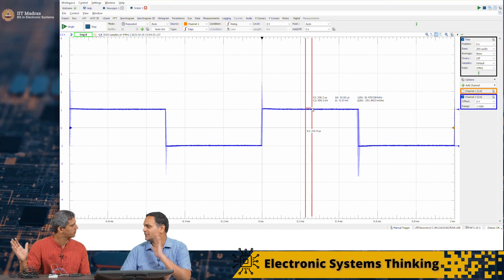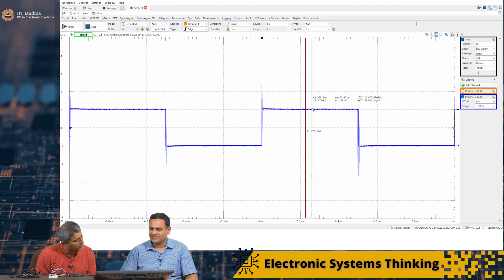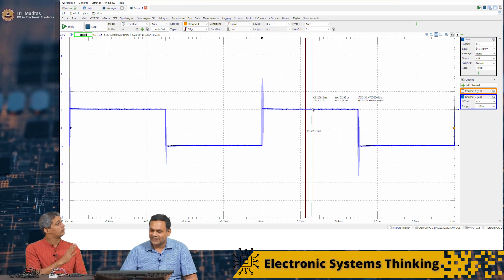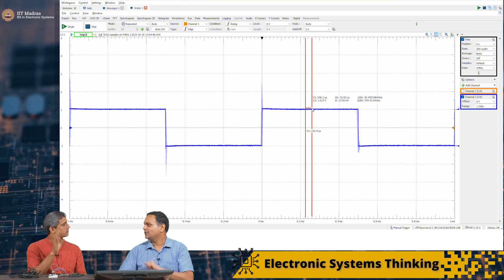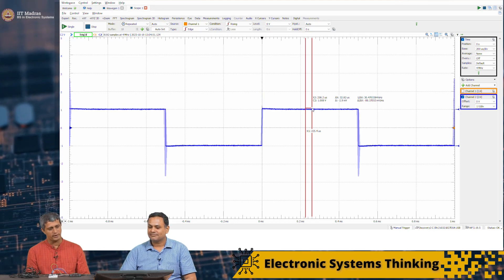Otherwise it is a logic 0. That is how we decode this piece of information on the receiver side. So in spite of all these non-idealities, we can send this successfully. This is very interesting.